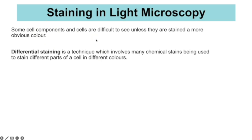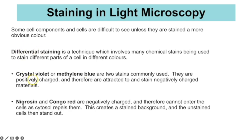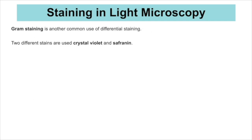Staining is used because some cell components are very difficult to see under the microscope unless you add a stain to make them a more obvious colour. Differential staining uses multiple chemical stains to colour different parts of cells differently. Crystal violet and methylene blue are positively charged stains attracted to negatively charged components of the cell. Nigrosin and congo red are negatively charged and cannot enter cells, instead staining the background so that unstained cells stand out.